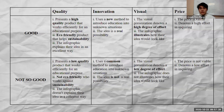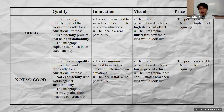Innovation refers to how common this concept was in the class — whether they were presenting something new and different or just another product — and also how viable the idea is. Visual refers to how it looks in relation to the effort given by the students in designing the product and illustrating it in the infographic. Price has to do with the research the students did to find out the real costs of the materials for their product.